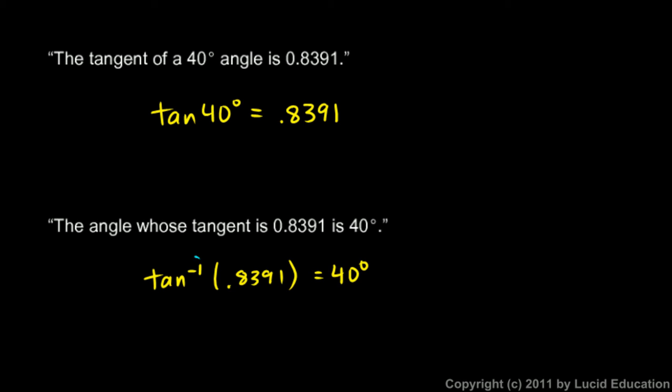Now this notation — this negative 1 — is a little unfortunate because it looks like an exponent. It's typically written smaller in the superscript position, just like an exponent, and negative 1 is a valid exponent. But this is NOT an exponent in this case. Don't read this as tangent to the power of negative 1 — that is wrong. Take this notation as a whole: this is the inverse tangent. Think of it as one thing, the inverse tangent. This is the same notation used for inverse functions, and this is, in fact, an inverse function — the inverse tangent is the inverse of the tangent.